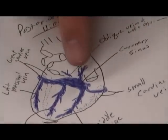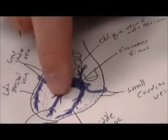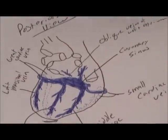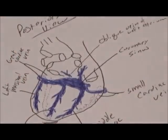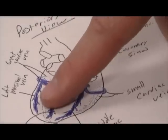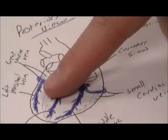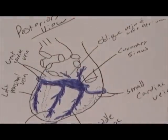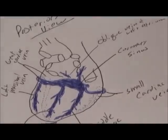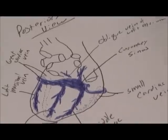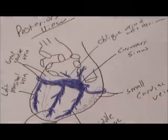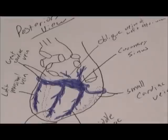On the posterior view you can see the coronary sinus, the left posterior ventricular vein, the middle cardiac vein, small cardiac veins on the right side, and a left marginal vein. These veins are named very similarly to the arteries because they travel parallel to the coronary arteries — that's one key thing to remember about coronary circulation. There is also the oblique vein of the left atrium, a very small, insignificant vein that does some slight drainage of the left atrium.